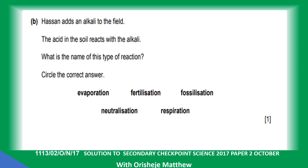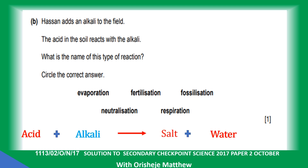The acid in the soil reacts with the alkaline. What is the name of this type of reaction? The reaction between acid and alkaline gives you salt and water — this is called a neutralization reaction. Acid plus alkaline gives salt and water: neutralization reaction.